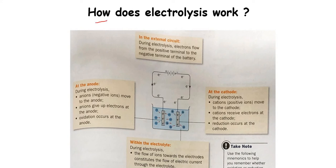There are multiple circuits happening during electrolysis. In the external circuit, electrons flow from the positive terminal to the negative terminal of the battery. At the cathode, which is the negative electrode, cations are pulled toward it because of its excess electrons.